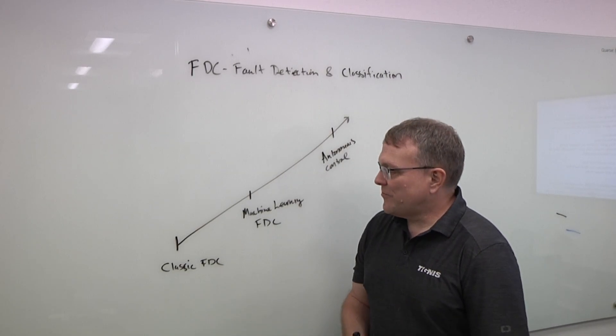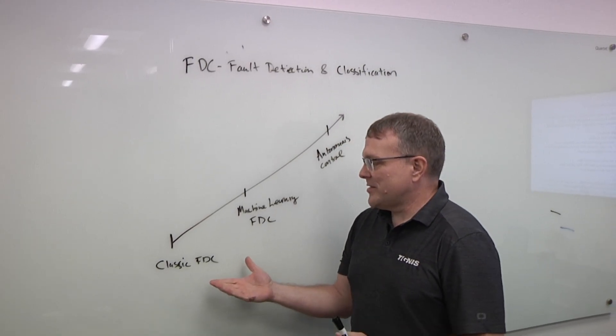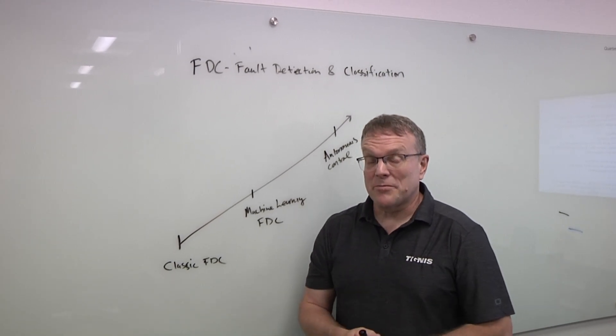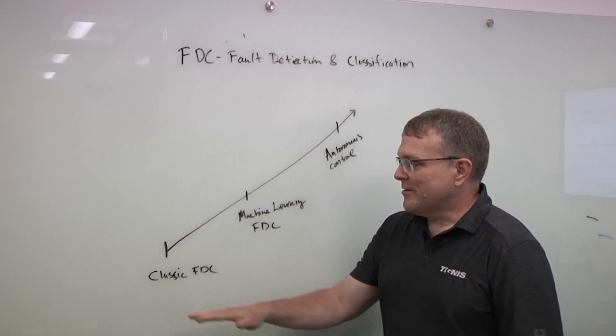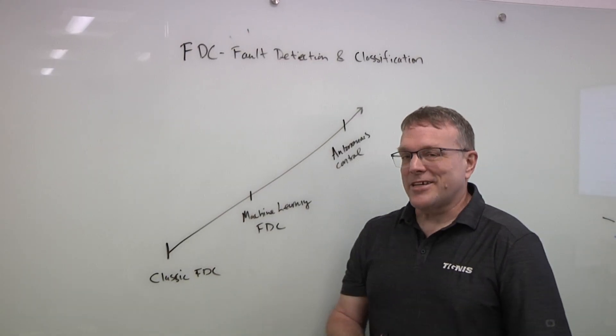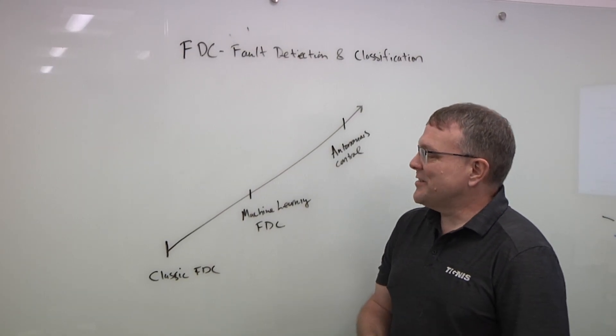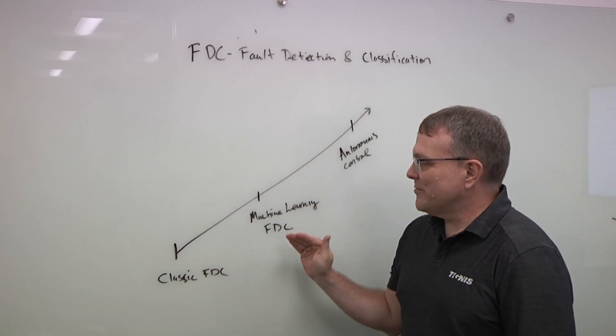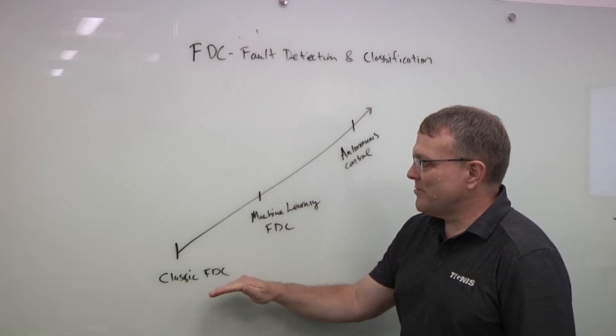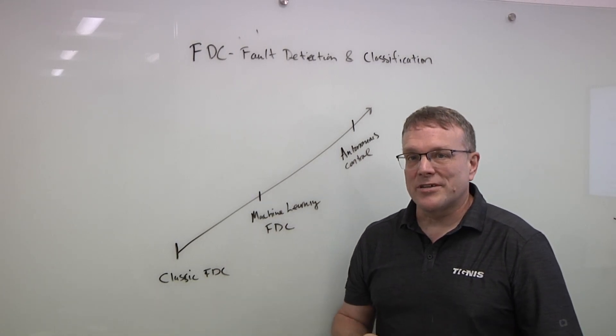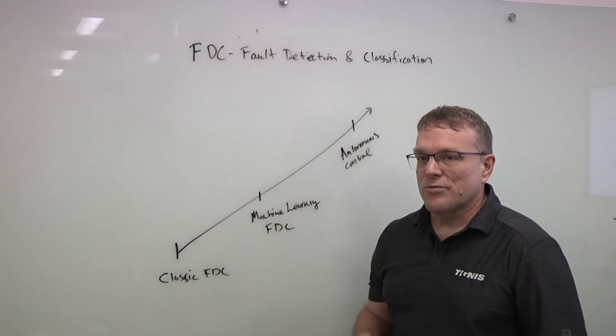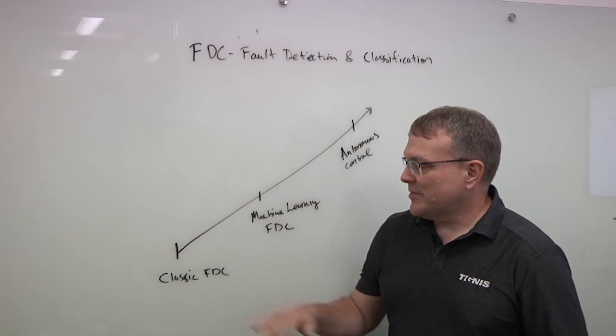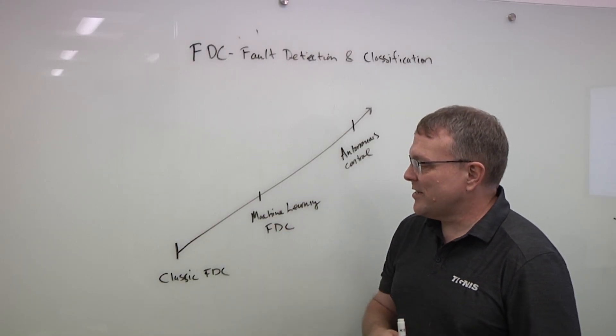Thanks, Ed. So fault detection classification is something that semiconductor manufacturing has been doing for some amount of time. We like to call this classic FDC, but I think that particularly there's a huge opportunity here to be applying machine learning to greatly improve what you can get done compared to classic FDC.